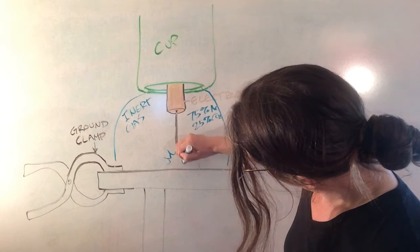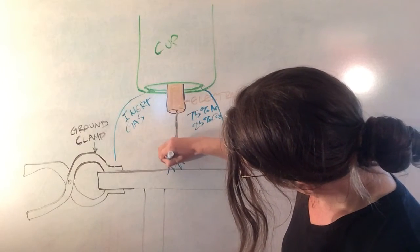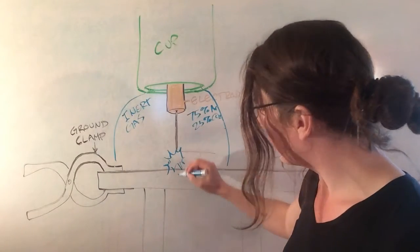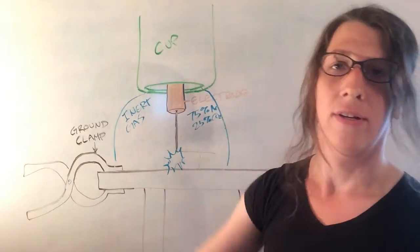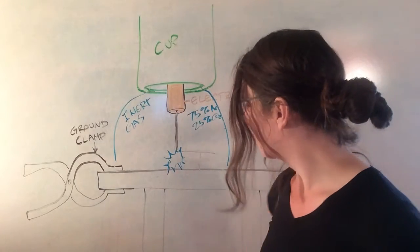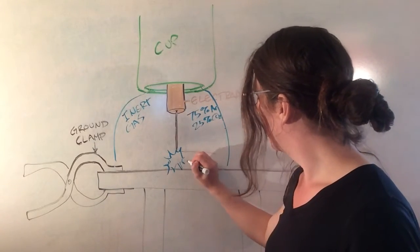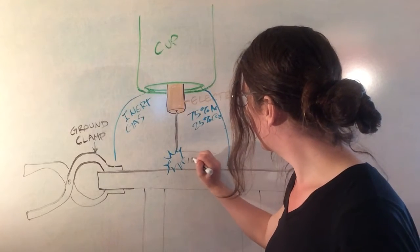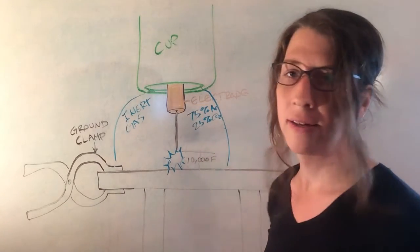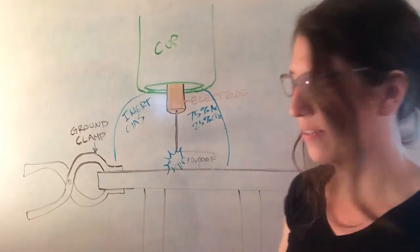And that resistance is thermal resistance. So we get this little spark. The electron jumps through the air, to the table, to the ground clamp. And that spark produces a heat of about 10,000 degrees Fahrenheit. It's about as hot as the surface of the sun.